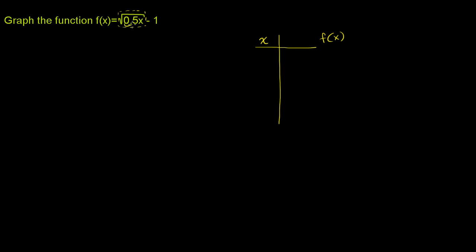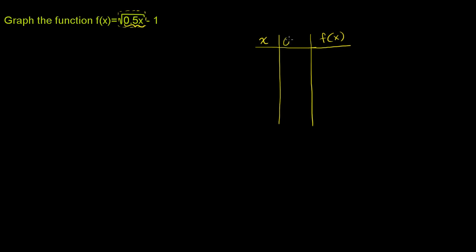For the result to be an integer, what's underneath the radical — 0.5x — needs to be a perfect square. Let me make another column to keep the math clean. You could pick arbitrary x points like 1, 2, 3, but on some of those you might get strange radicals, which would be hard to graph without a calculator. So let me write what 0.5x is — we want it to be a perfect square so that its square root is an integer.